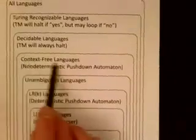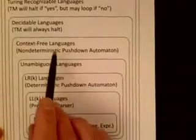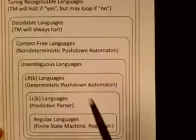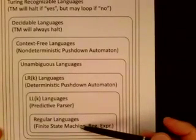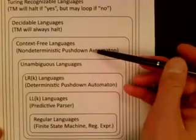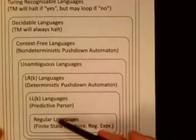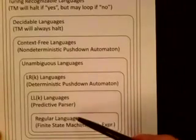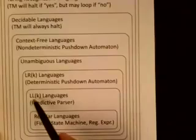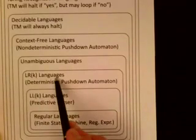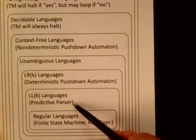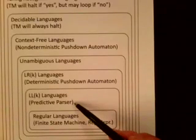Then there's the context-free languages. The machine that corresponds to regular expressions is a finite state machine, and the machine that corresponds to context-free languages is a non-deterministic push-down automaton. It's a proper subset — all regular languages are included in the context-free language category, but there are others that aren't. There are several different kinds of context-free languages: here I have LLK languages, which are parsed by predictive top-down parsers — these are fairly simple and quick and easy to parse.